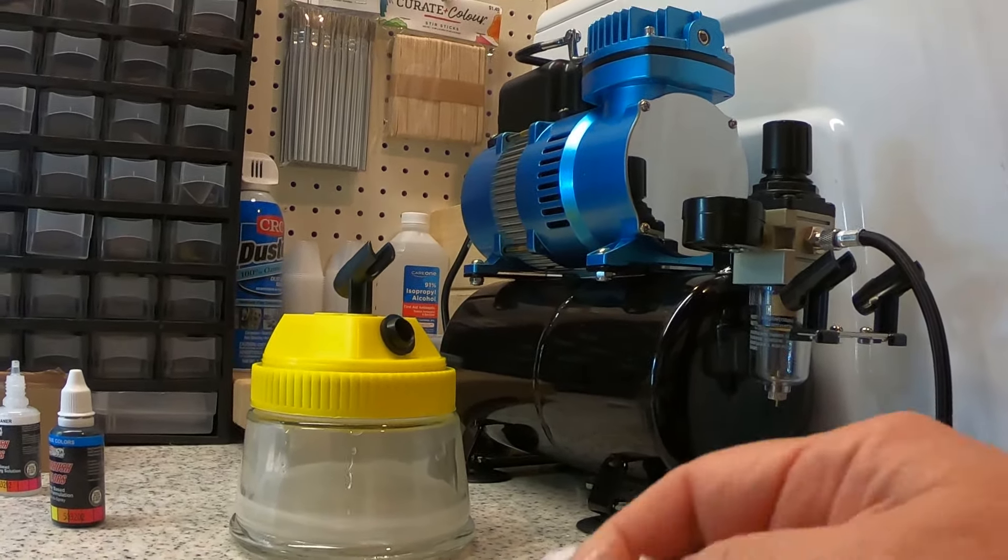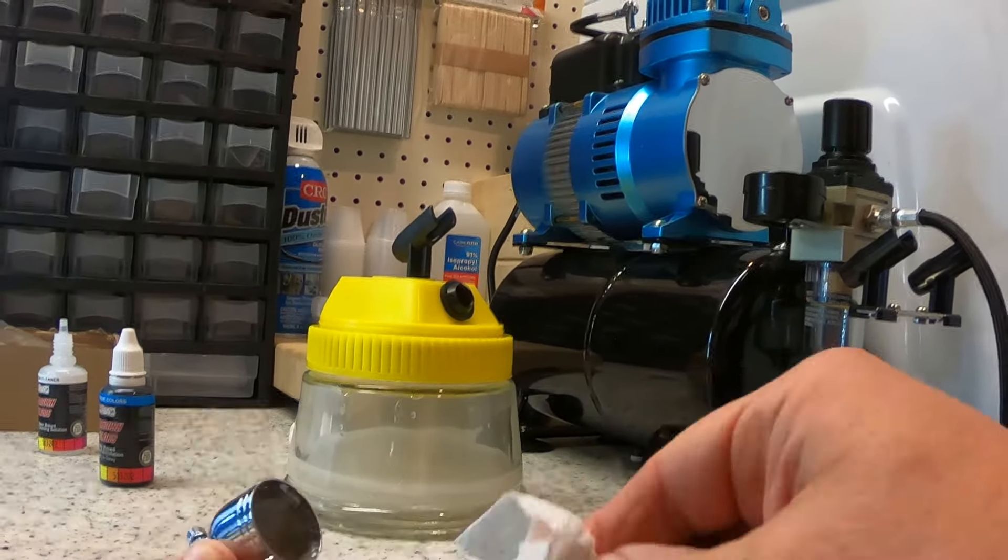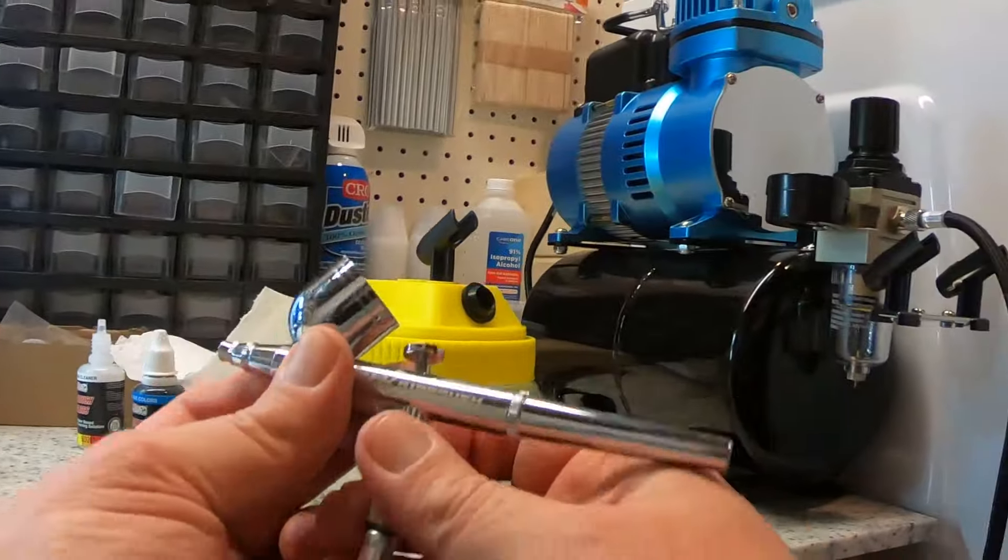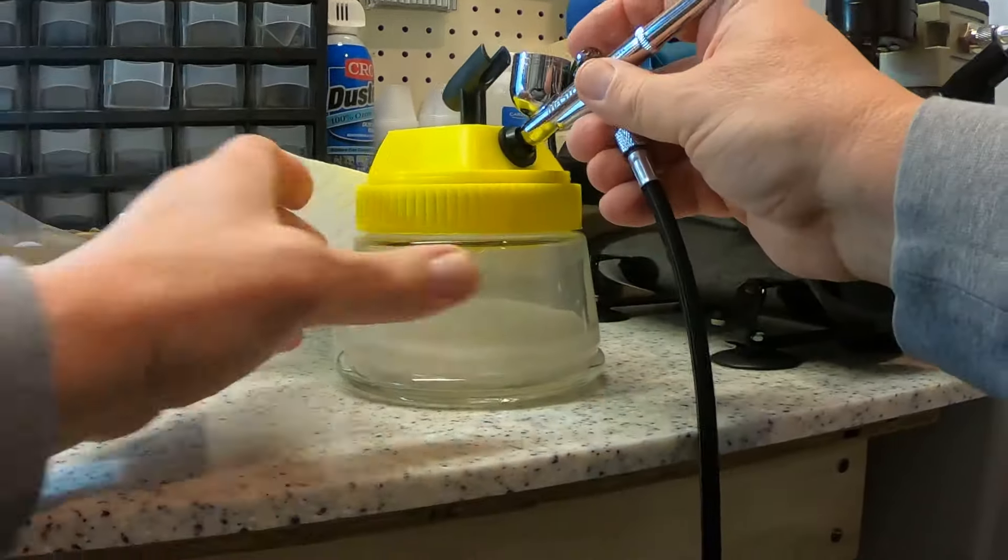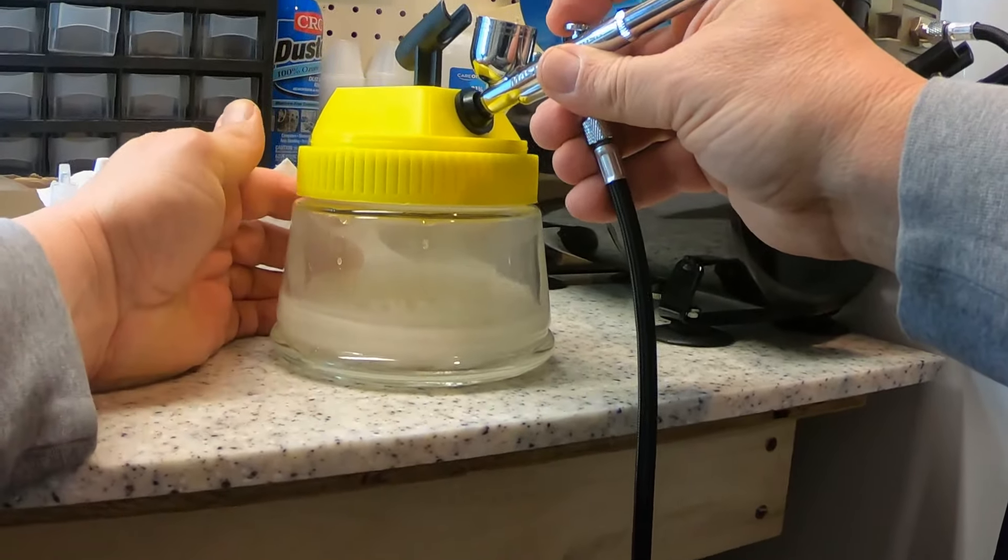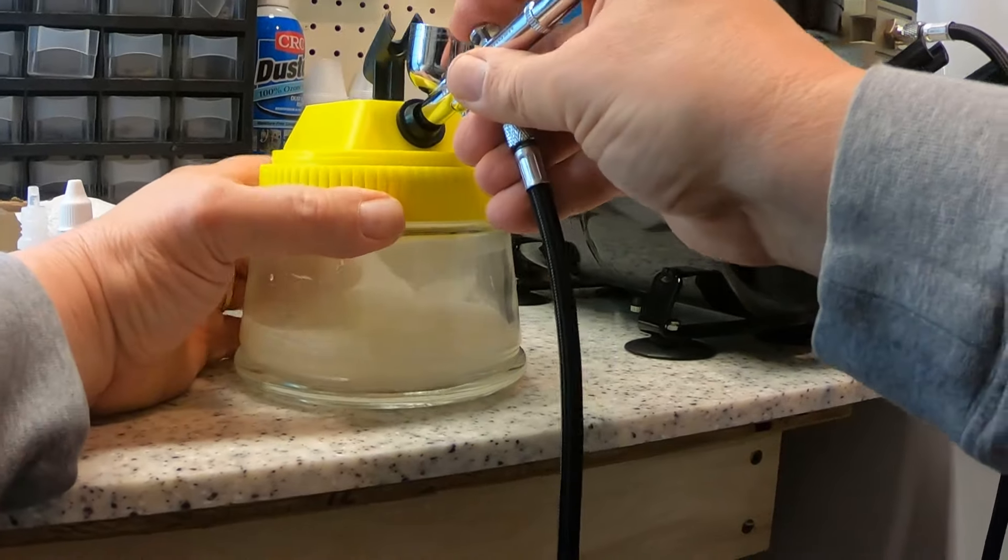What I like to do is get most of the paint out of the bowl, and drop a little cleaner in there and spray it in this.